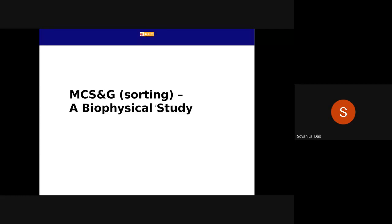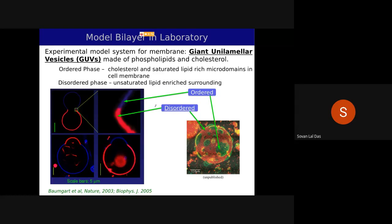This biophysical study is done on a model lipid bilayer in the laboratory using giant unilamellar vesicles (GUVs). They are made from commercially available dry lipid powders following a protocol, resulting in closed sacs — like a football — filled with water inside and outside. They are called giant because they are in the micron size range, and unilamellar because there is only one bilayer, like the plasma membrane.